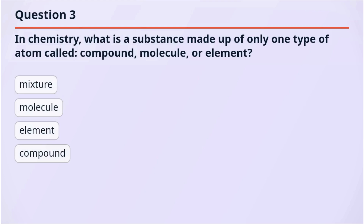Question 3. In chemistry, what is a substance made up of only one type of atom called — compound, molecule, or element?